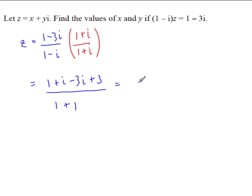So this equals 1 plus 3 is 4. Plus i minus 3i is minus 2i all over 2. So we have 2 minus i.